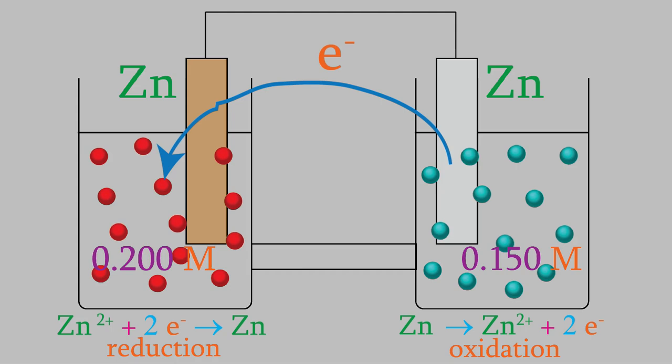So, these are the two half reactions in the voltaic cell. You probably noticed that the reaction on the right is just the reverse of the one on the left, but that's okay.